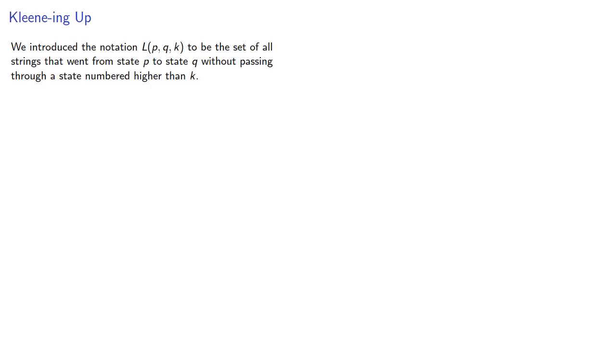We introduced the notation L(p,q,k) to be the set of all strings that went from state p to state q without passing through a state numbered higher than k. So if our initial state is k equals zero, then the language accepted is the union over all possible accepting states and all k in our set of states.